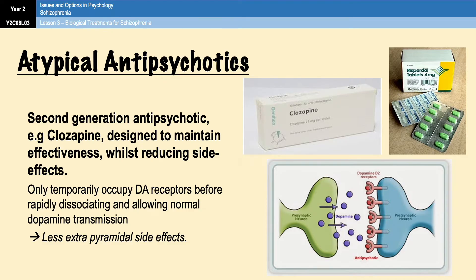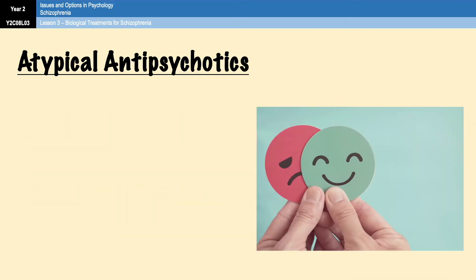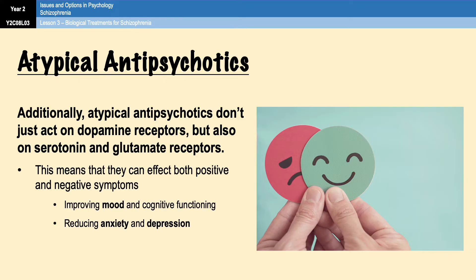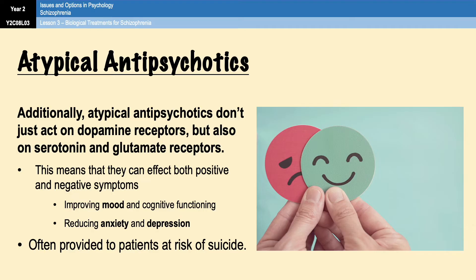The fact that atypical antipsychotics tend to have less extrapyramidal side effects is thought to be a result of this temporary binding to receptors. Two examples of atypical antipsychotics are clozapine and risperidone. As well as acting on the dopamine system, atypical antipsychotics also act on the serotonin and glutamate systems. It's thought that this action helps to improve mood and cognitive functions and reduce depression and anxiety in patients. This mood-enhancing effect means that they're sometimes prescribed to patients who are at risk of suicide, which is important given that 30-50% of people with schizophrenia attempt suicide at some point.